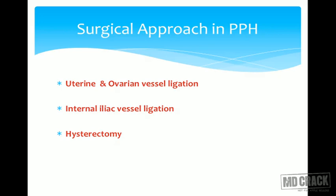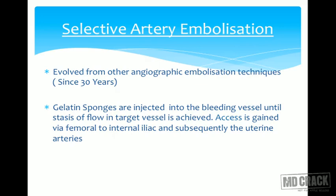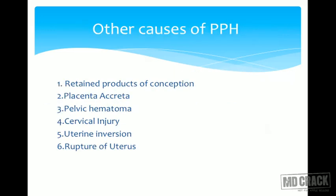If internal iliac ligation also fails and uterine atony persists, obstetric hysterectomy must be performed. Usually a subtotal hysterectomy is done because it is quicker in an emergency. A newer method is selective arterial embolisation, where a gelatin sponge is injected into the bleeding vessels to achieve stasis. In internal iliac ligation, when vessels are ligated, collateral circulation remains but arterial pressure falls and converts to venous circulation, allowing time for clot formation and reducing blood loss.